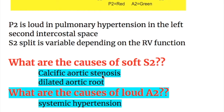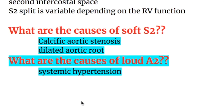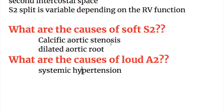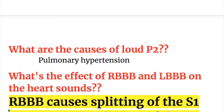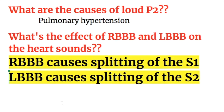In pulmonary hypertension, P2 is loud at the left second intercostal space, and S2 split is variable depending on RV function — it may decrease, increase, or be normal. Causes of soft S2 include calcific aortic stenosis and dilated aortic root. Loud A2 is caused by systemic hypertension, and loud P2 by pulmonary hypertension. Right bundle branch block causes splitting of the first heart sound, whereas left bundle branch block causes splitting of the second heart sound.